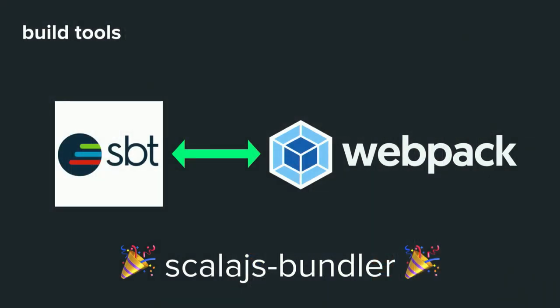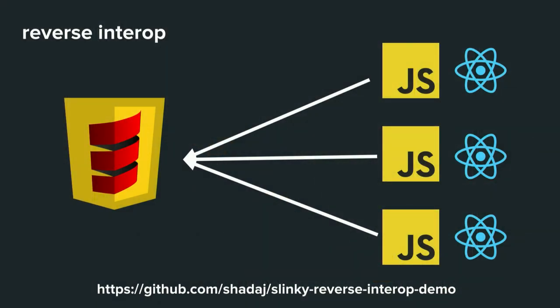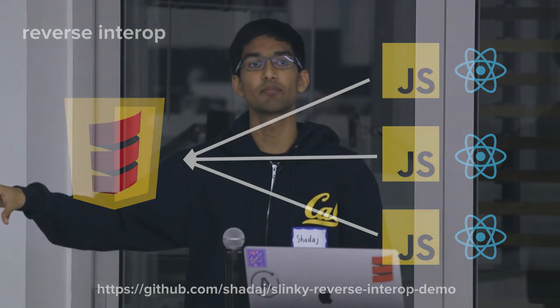Working with the ecosystem also means working with its build tools. Webpack is a popular bundler that takes all your JavaScript dependencies and puts them into a single bundle. Through the Scala.js Bundler SBT plugin, SBT can talk to Webpack, managing all the different build tools for a web application under one single build file. Slinky also supports reverse interop — you can export Slinky components written in Scala to JavaScript land, letting JavaScript developers use your Scala-implemented components just like regular components.